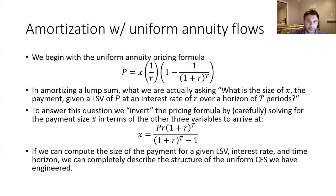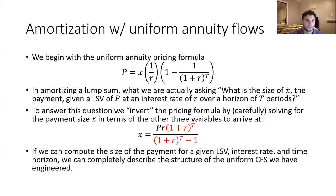It turns out if you do this — you might want to pause the video and try it on your own — you should wind up getting the following value for the size of the particular payment corresponding to a uniform cash flow stream that corresponds to a single lump sum value of P. Algebraically, I would recommend first multiplying through by R to move the one-over-R factor over to the left-hand side. That's where the P·R term comes from. Then you get a common denominator in the red term — the common denominator will be one plus R raised to the T power — and then dividing through will isolate X for us. So make sure you can do that algebra and see that these two equations on the slide are the same equation, just one in terms of P and one in terms of X.